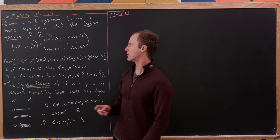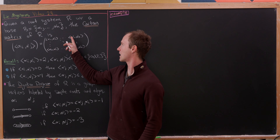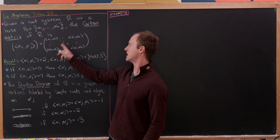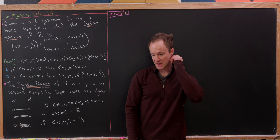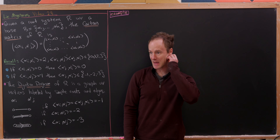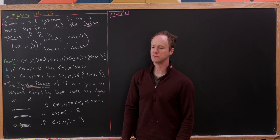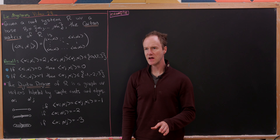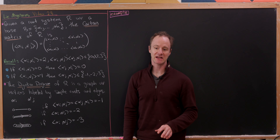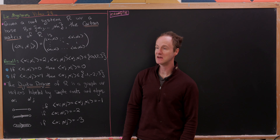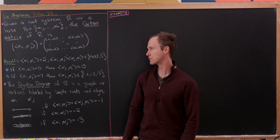That builds the following matrix. So we've got alpha 1, alpha 1 in the top left, alpha 1, alpha n, alpha n, alpha 1, and alpha n, alpha n. Notice this seems like it may depend on the choice of the simple roots, but due to a result that we proved in the last video, this is in fact independent of the base of the root system.